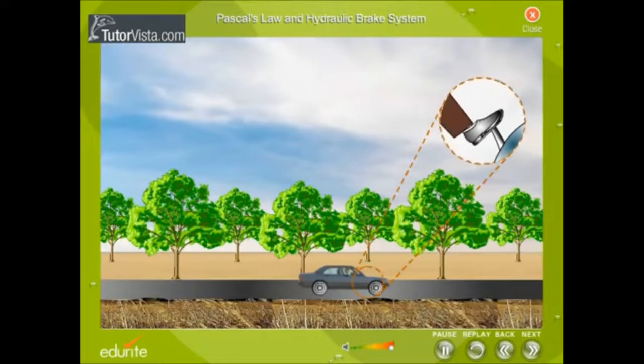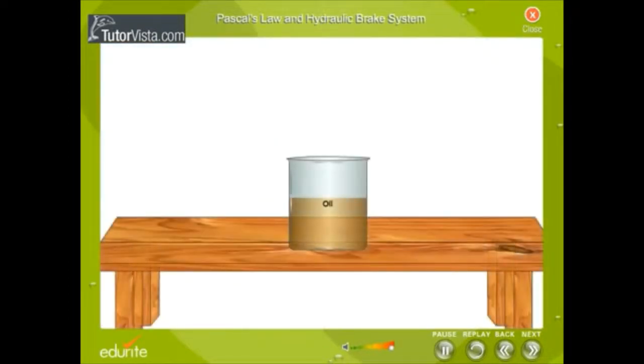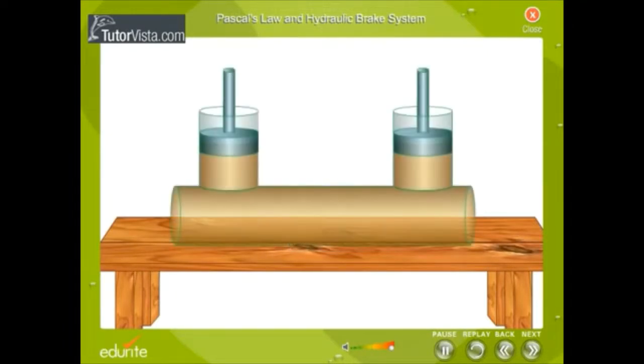The basic idea behind any hydraulic system is very simple. The force applied at one point is transmitted to another point using an incompressible fluid, generally oil. Most brake systems also multiply the force in the process. Here you can see the simplest possible hydraulic system. Two pistons are fitted into two glass cylinders filled with oil and connected to one another with an oil filled pipe.